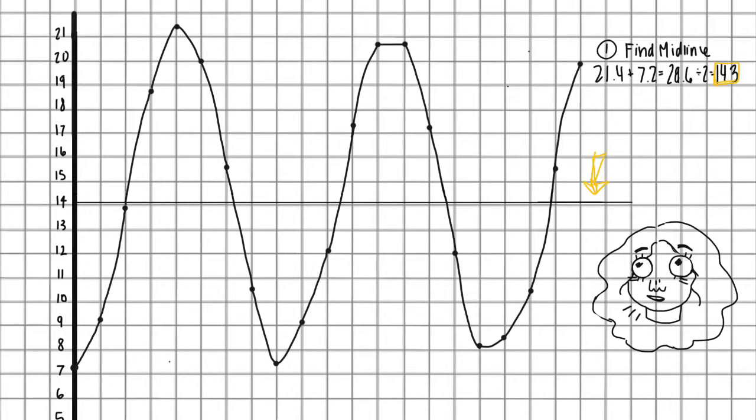So we have the midline. The second step is defining the amplitude. The amplitude is the distance from the midline to the maximum value, but it also can be calculated by the absolute value of maximum value subtract minimum value divided by 2, which is 7.1.